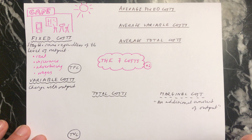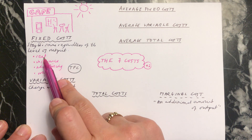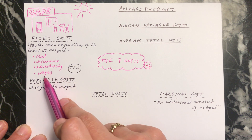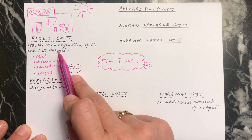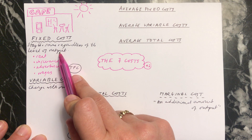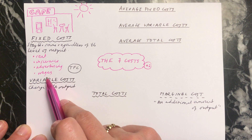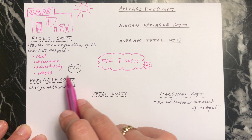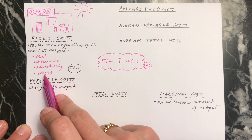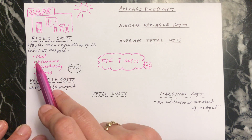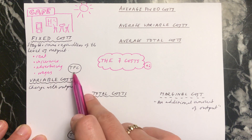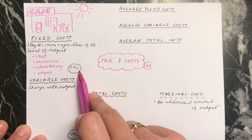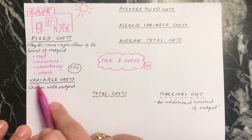It doesn't matter whether you have one customer, 10 customers, or 100 customers — your rent, your insurance, your advertising, your wages are always going to stay the same. So regardless of how many customers or how much output you have, you're still going to pay the same fixed costs. Your total fixed costs are just adding together all of your fixed costs — whatever you're paying for rent, insurance, advertising, and wages.